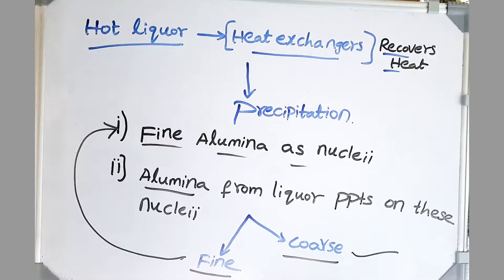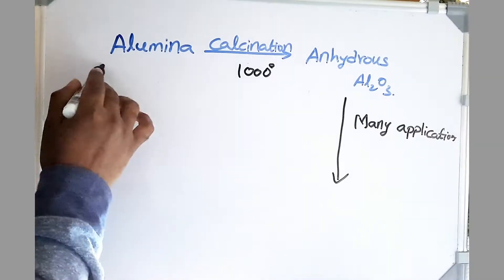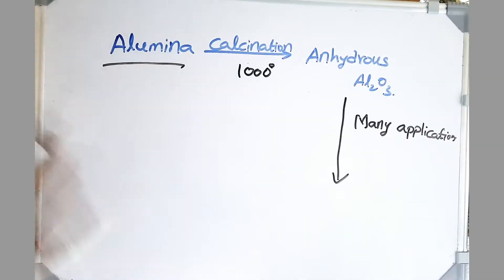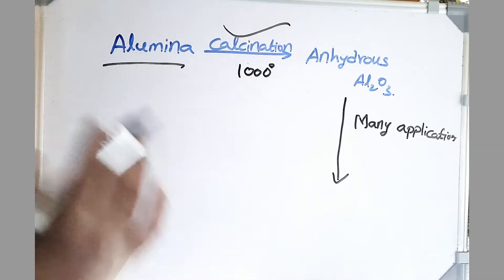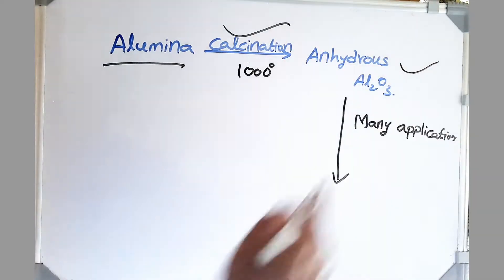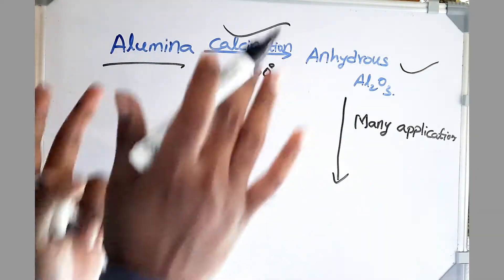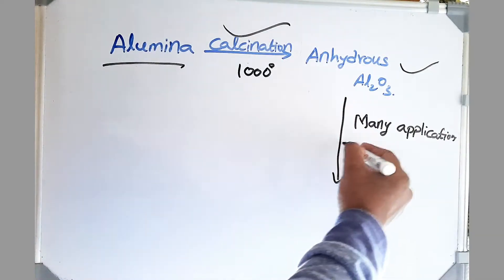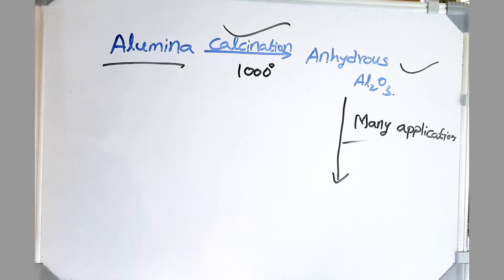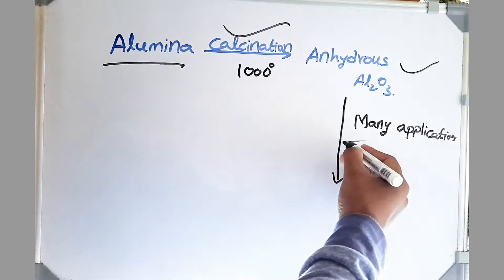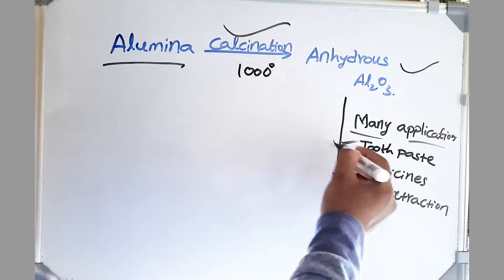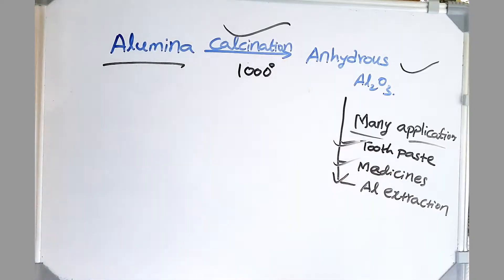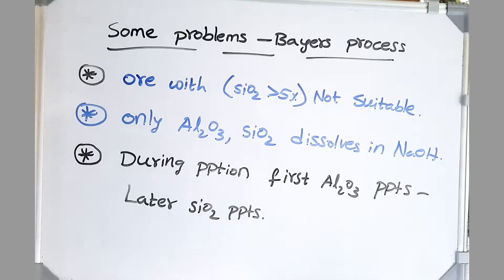The coarse particles obtained after precipitation undergo calcination because we need to remove water molecules. Now we have anhydrous alumina — this is our final product. It has many applications apart from aluminum extraction, such as in toothpaste, medicine, and aluminum extraction itself.